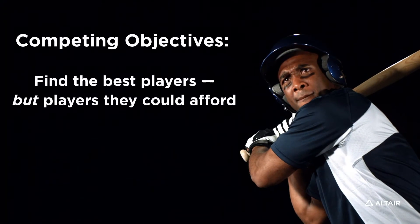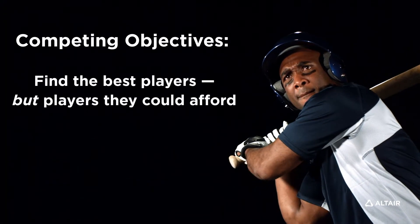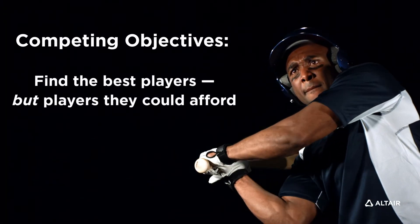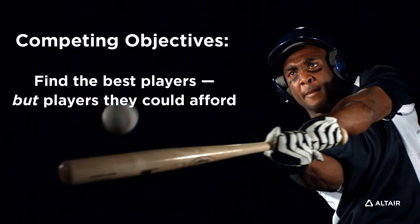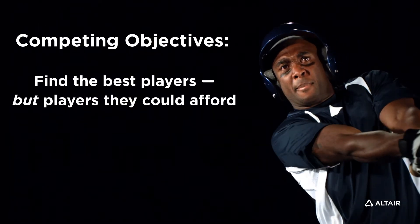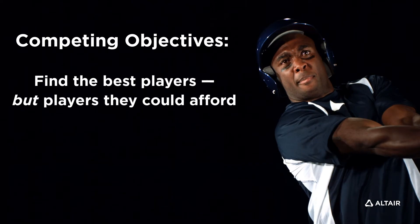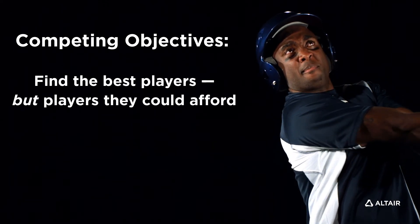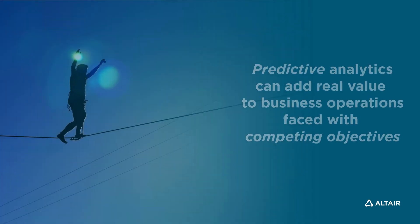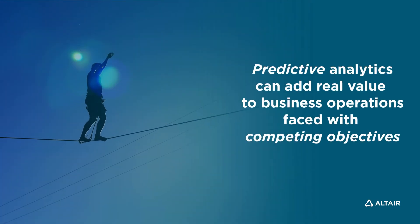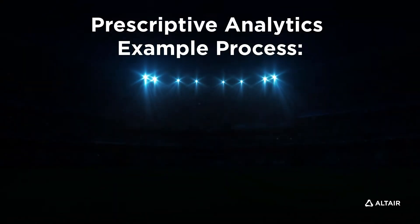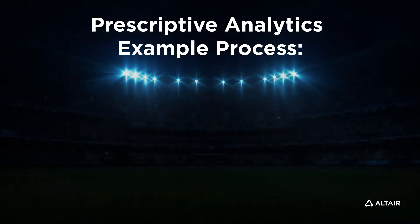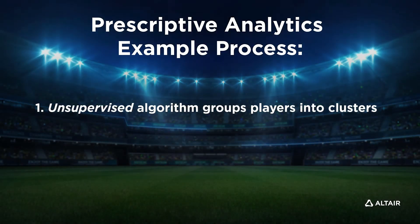Let's think back to the Moneyball story from part one of this series. Essentially, the Oakland A's had two competing objectives: find the best players, but players they could afford on their limited budget. They had to find the right balance between two competing objectives. A baseball team can also apply a prescriptive analytics process that, first,